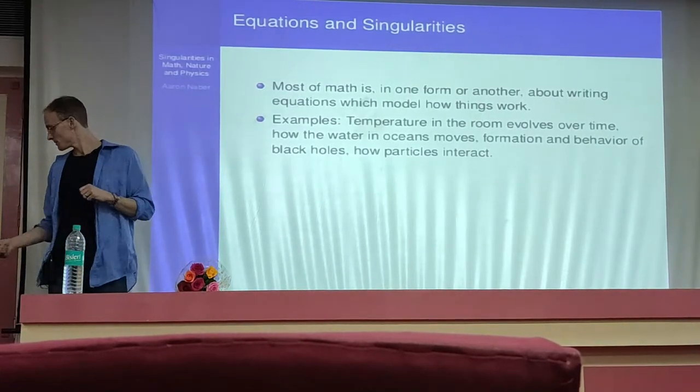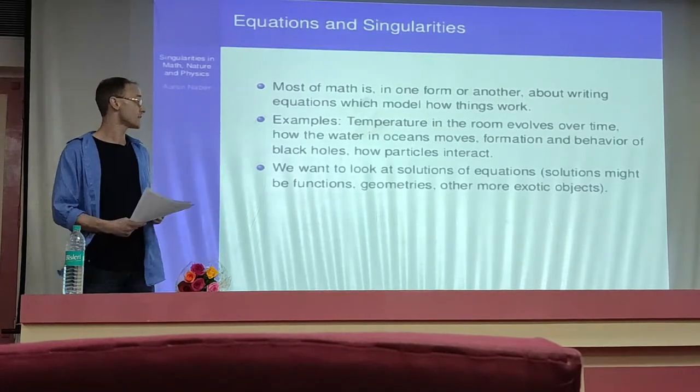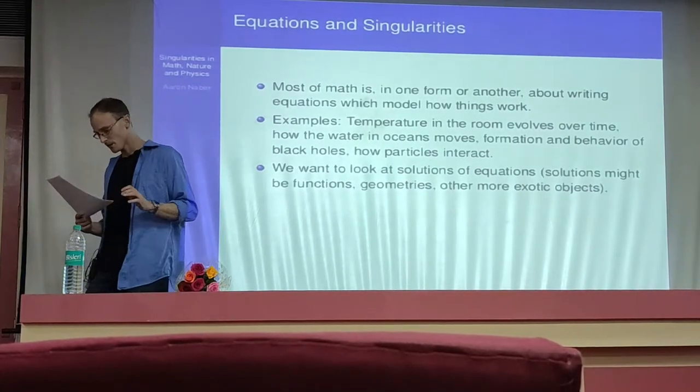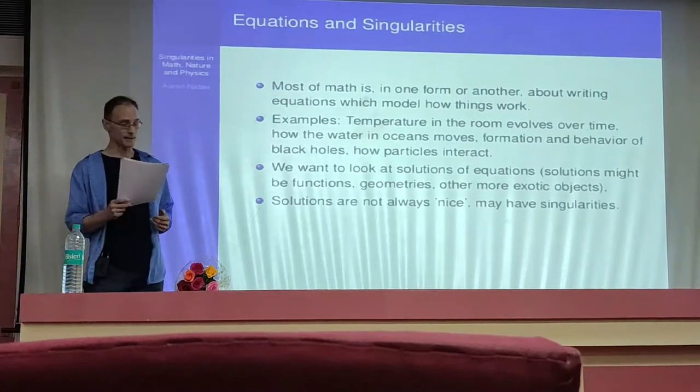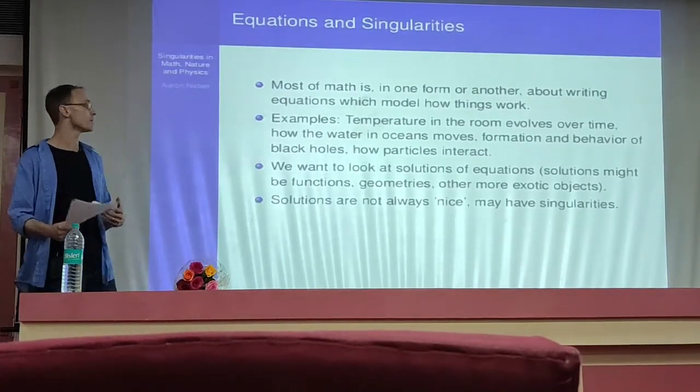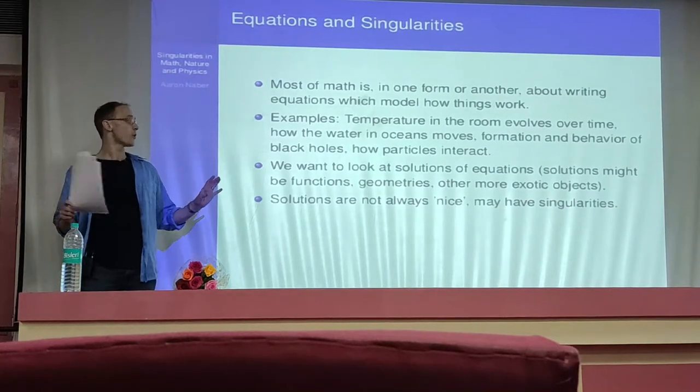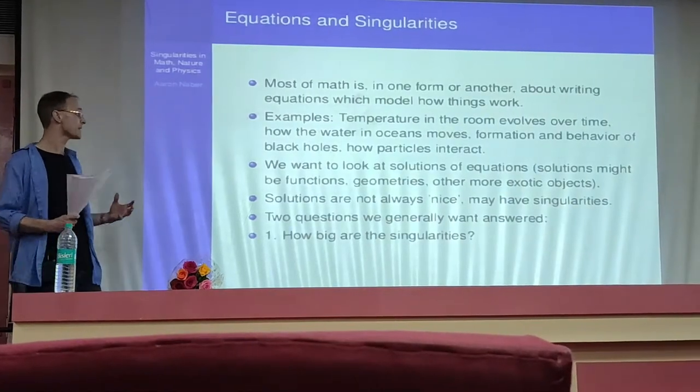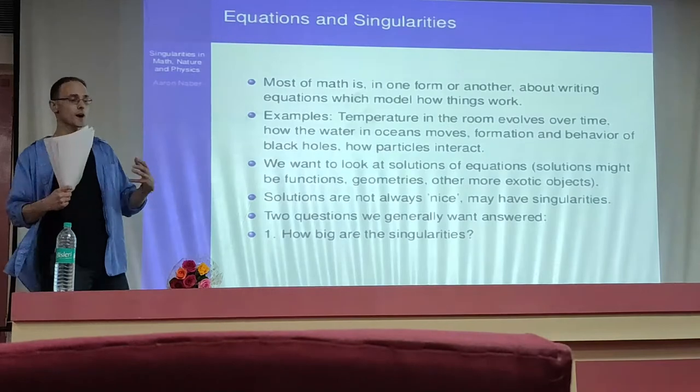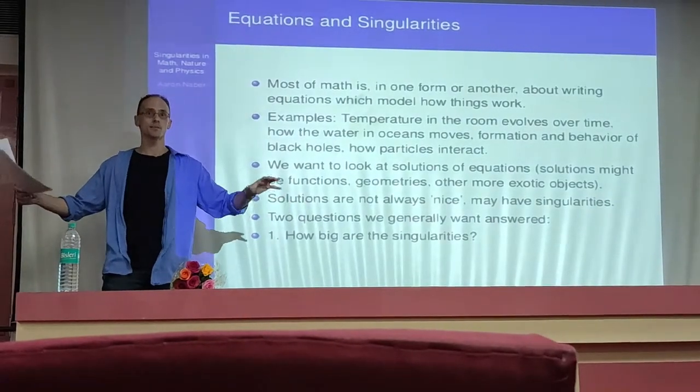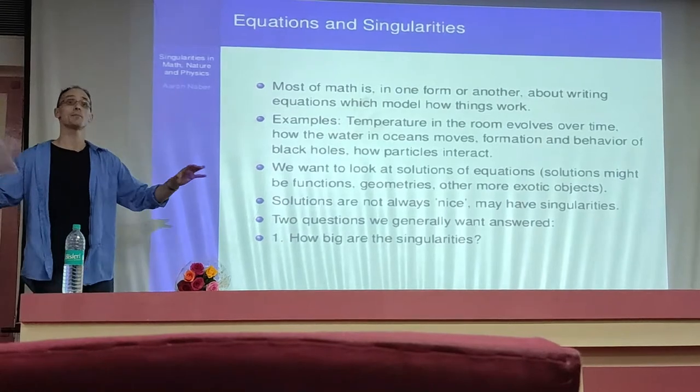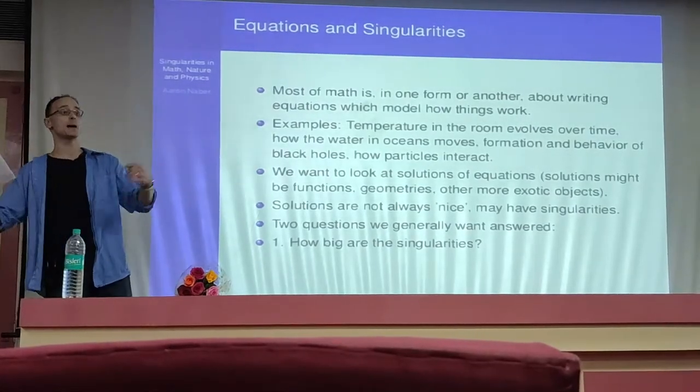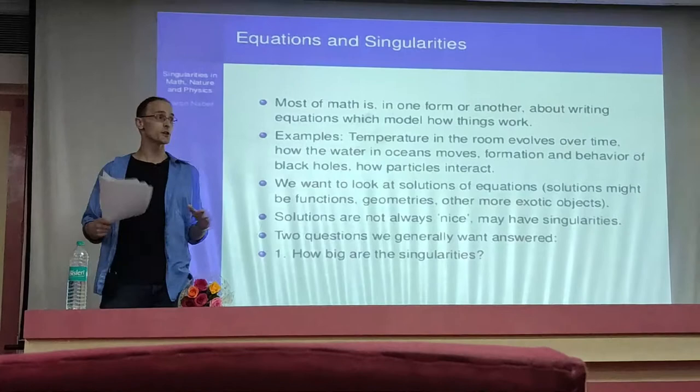What we're going to want to do is look at solutions to these equations. They could be functions or shapes or more exotic objects. The solutions are not going to always be nice. They're going to have these singularities. There's two main questions we're going to want to ask about these singularities. The first one's going to be, how big are the singularities? If you're modeling something and everything can be singular, then something's wrong. You should expect singularities to not be everywhere. Not everything should be a black hole. It's consistent in time. It shouldn't be everything.